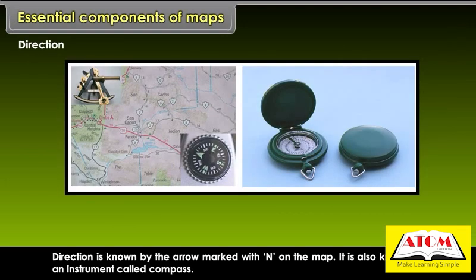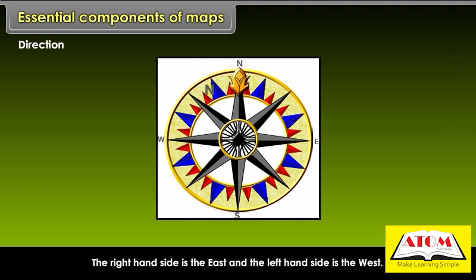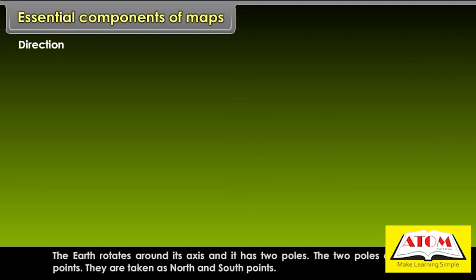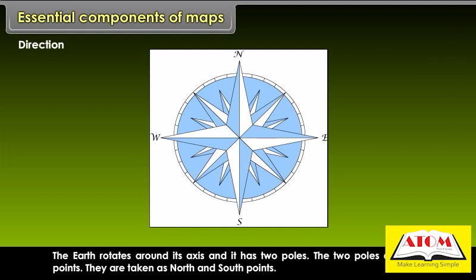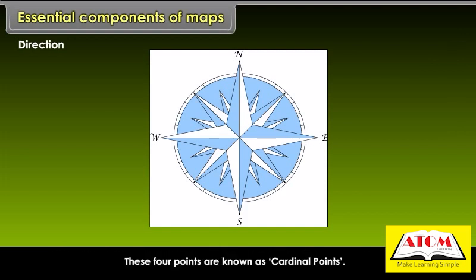Direction is known by the arrow marked with N on the map. The top of the map, on which the title is written, is always to the north, and the lower part of the map is to the south direction. The right-hand side is the east and the left-hand side is the west. The earth rotates around its axis and has two poles. The two poles are fixed points, taken as north and south points. When you draw a line from north to south pole, the right side of this line is east and the left side is west. These four points are known as cardinal points.